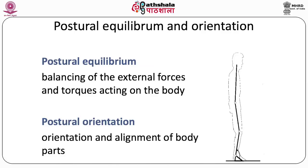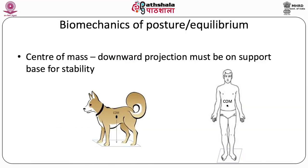The second objective is postural orientation, which represents a balance between the various forces acting on us and achieving a specific orientation. This can be an internal orientation — for example, standing with the trunk above the legs, legs extended, and hands extended — or an external orientation with respect to the world around us.